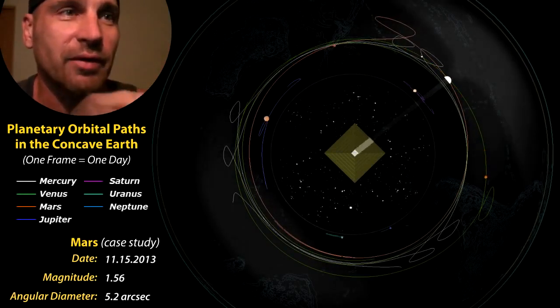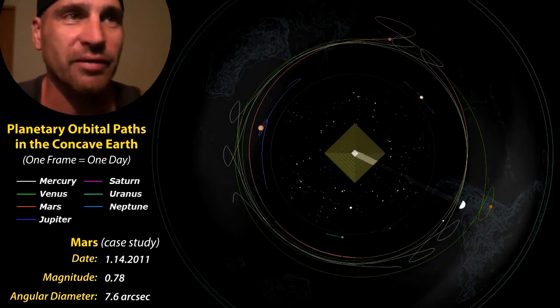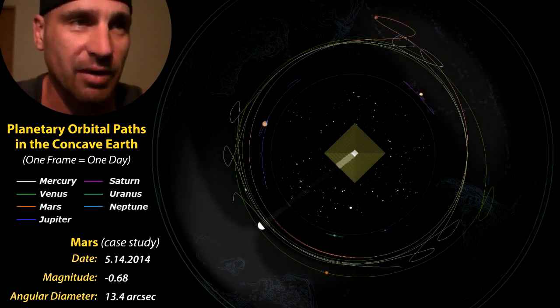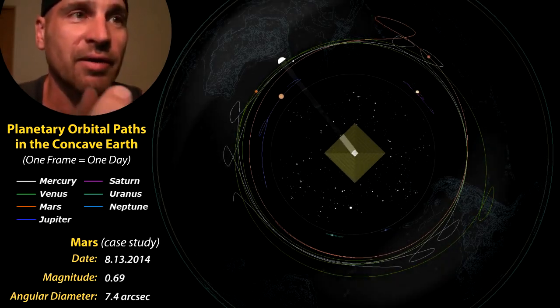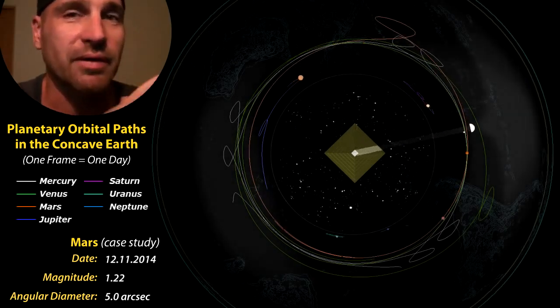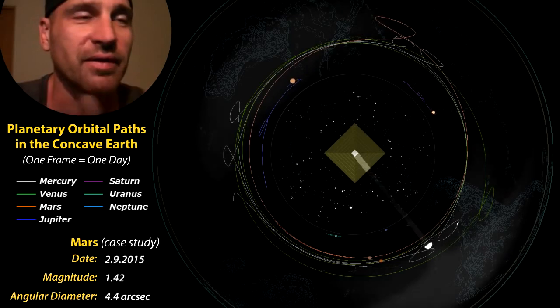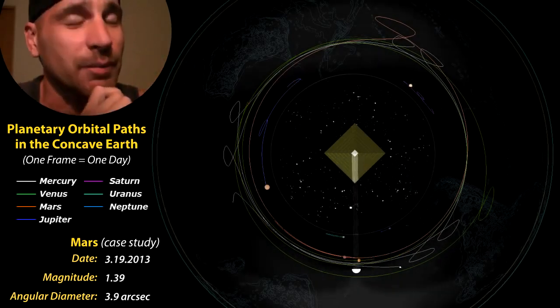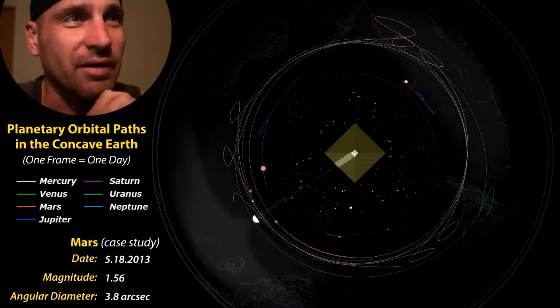Interesting too, that when Venus goes in front of the Sun or Mercury goes in front of the Sun, obviously they get the crescent. Those are the only two planets that get a full crescent. But when they do get the crescent, the crescent is very bright as opposed to when it goes behind the Sun and there's no crescent, but it's fully illuminated, but it's dim. You have to wonder why is that happening? Well, it's because the back of the Sun is dark. That's why it's happening.